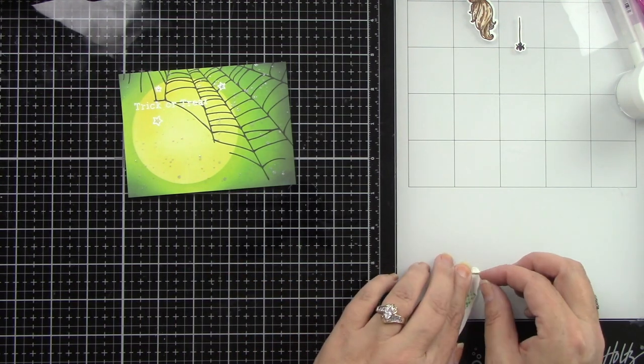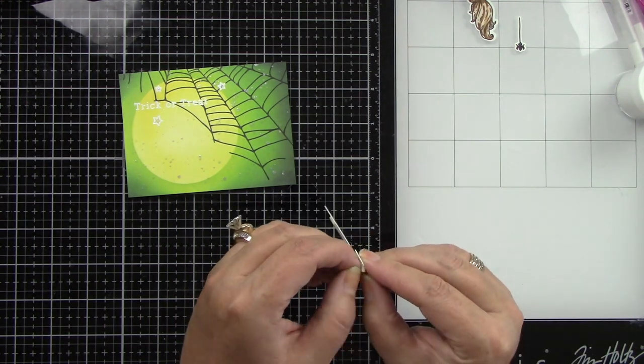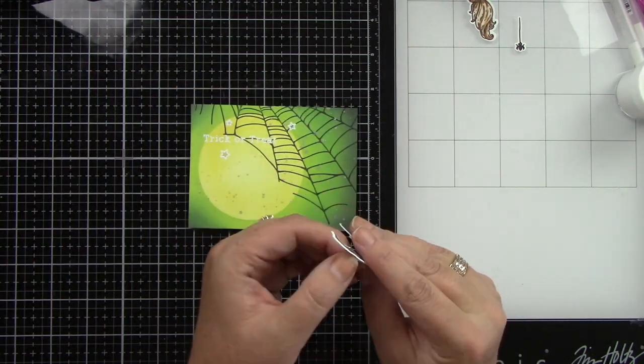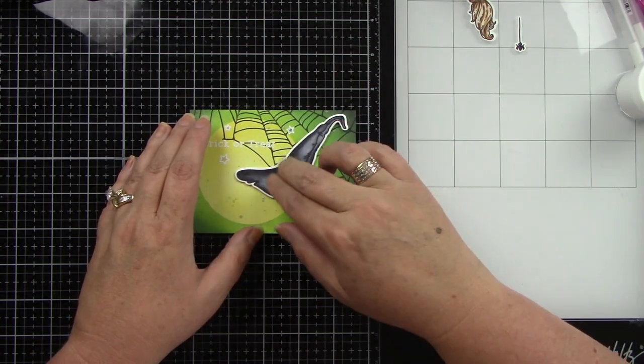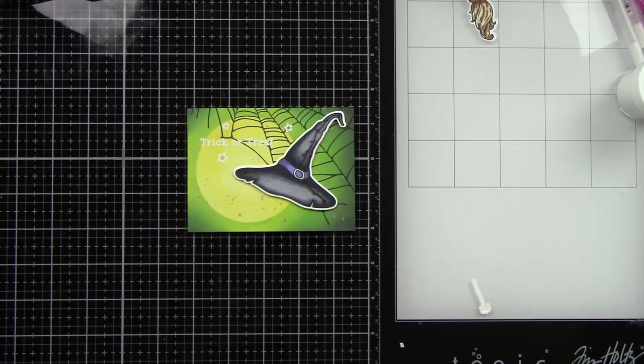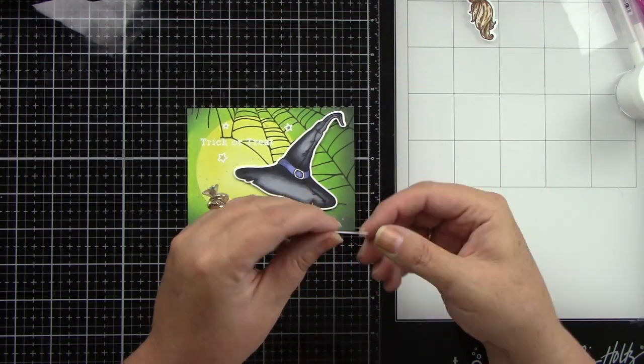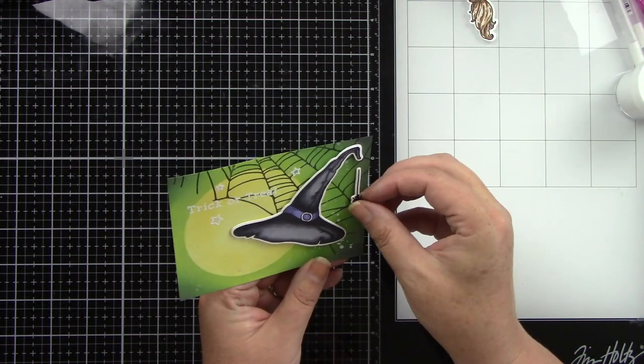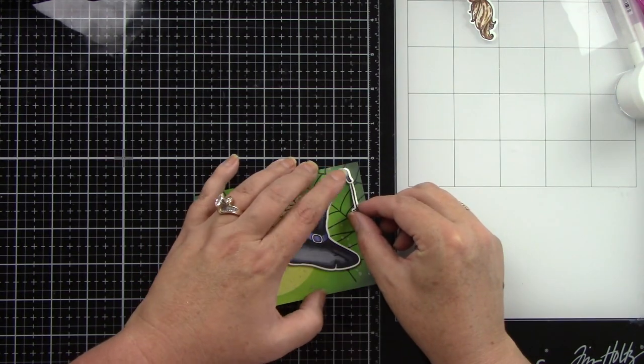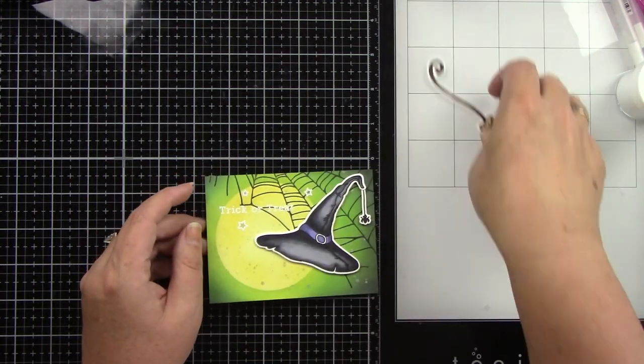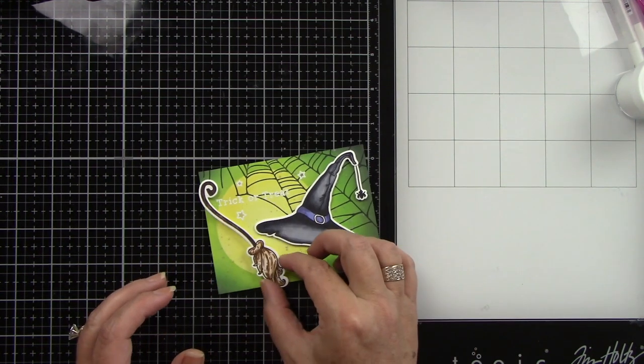Some foam tape behind the witch's hat because I love dimension. I want this to pop up. Then the cute broom on a little tilt, and that tiny spider hanging off his web—which I thought would be darling off the tip of the hat. He has a little foam tape as well.